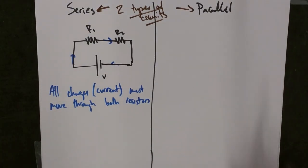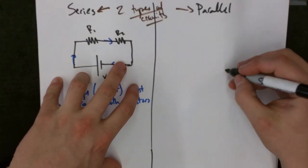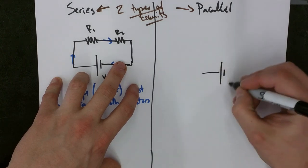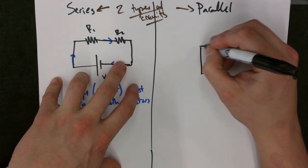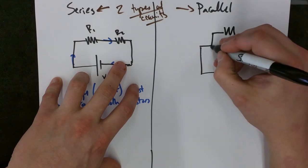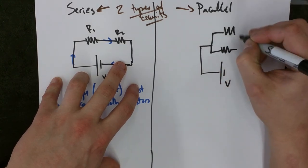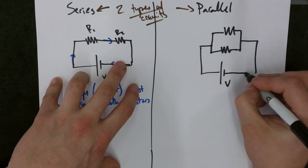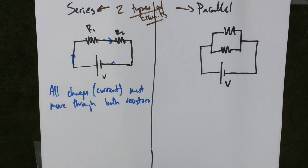And over here, I'll draw my parallel circuit. I've got my voltage battery, and I'll have a resistor here, and a resistor here. And then they regroup, and I have a closed circuit.